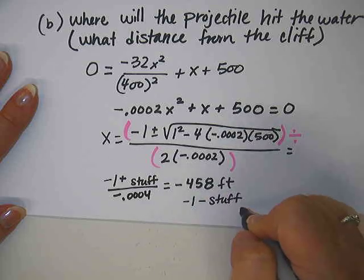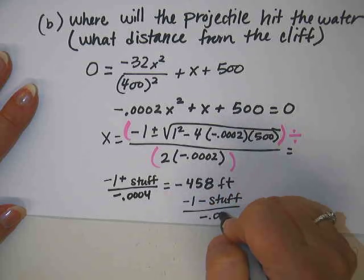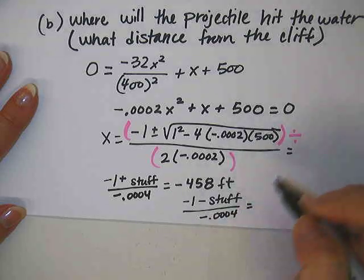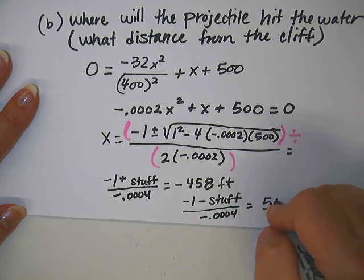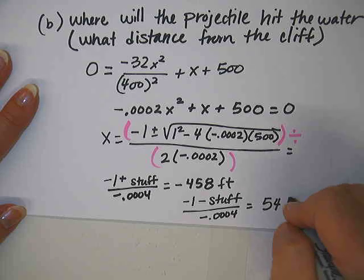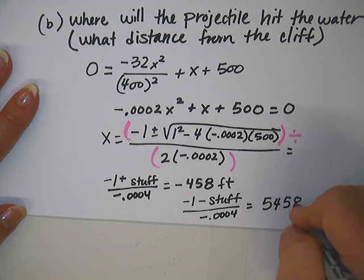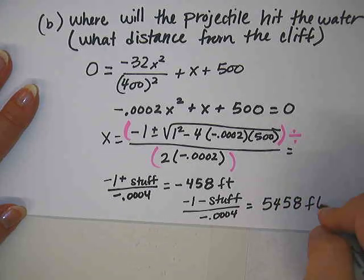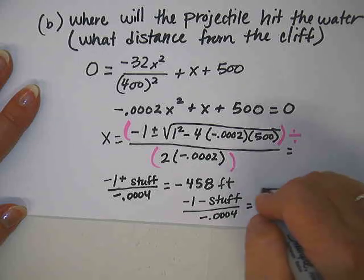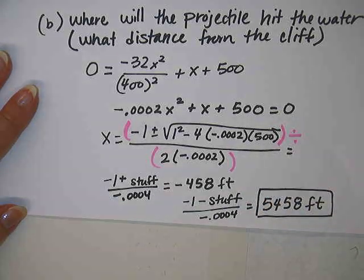So let's try this again with the minus instead of the plus. So we're going to go negative 1 minus all that stuff in the square root divided by negative .0004. And this time we get positive 5458.039. Let's just round it to 5,458 feet. And that's where the projectile will hit the water.